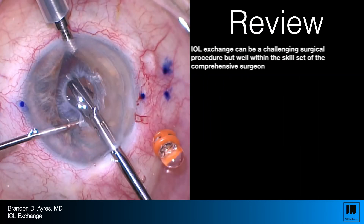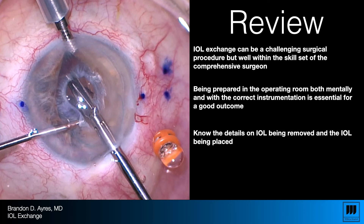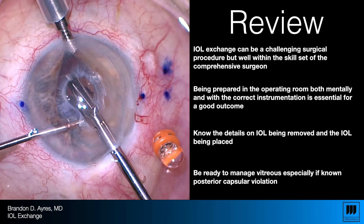IOL exchange can be a challenging surgical procedure but is well within the skill set of the comprehensive ophthalmic surgeon. Being prepared both mentally and with the correct instrumentation is essential for a good outcome. Know the details on the type of IOL being removed and the status of the capsule so you have the right equipment available. Be ready to manage vitreous, especially with a known posterior capsular violation — and sometimes even when you don't know there's a violation. Always be ready with vitrectomy.